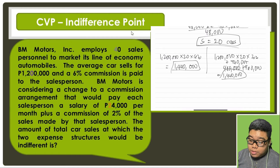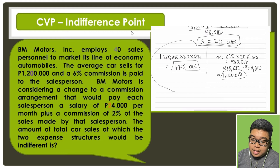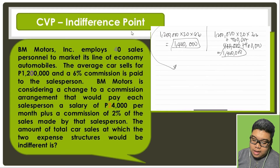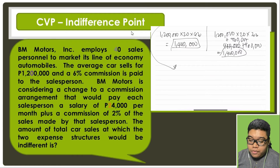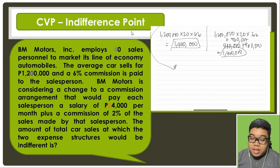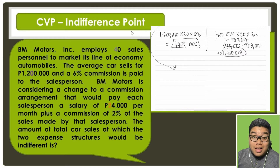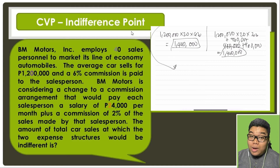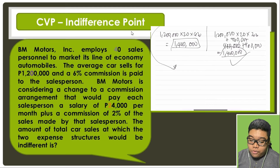What is the significance of this indifference point of 20 cars? In the first situation with purely variable costs, that scheme is better if car sales are lower than 20. If car sales increase beyond 20, then it is better to have the fixed cost scheme — the proposed plan with salary plus lower commission.